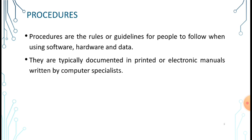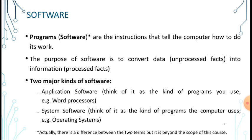The second part of the information system is procedures. Procedures are rules or guidelines for people to follow when using software, hardware, and data. They are typically documented and printed in physical or electronic manuals written by computer specialists.